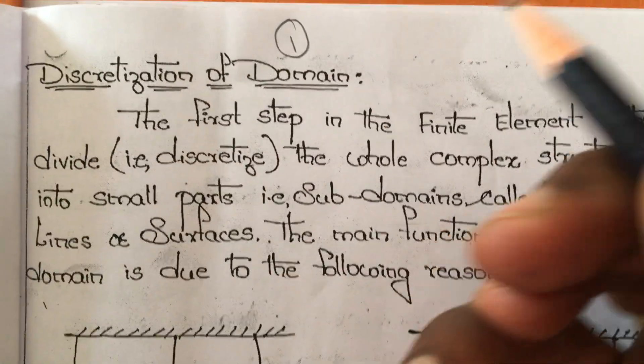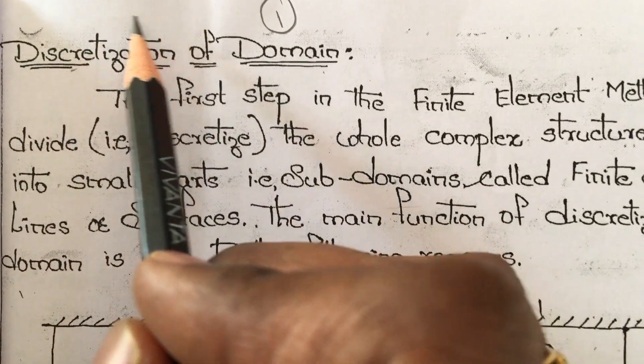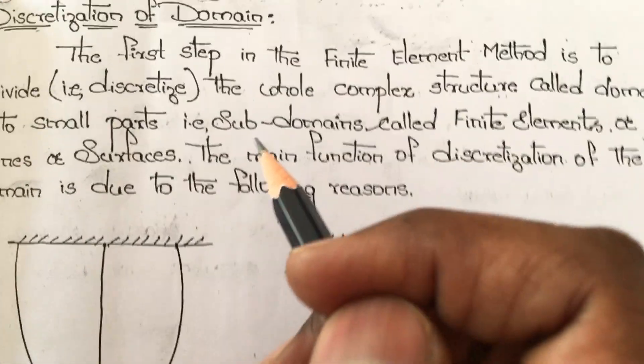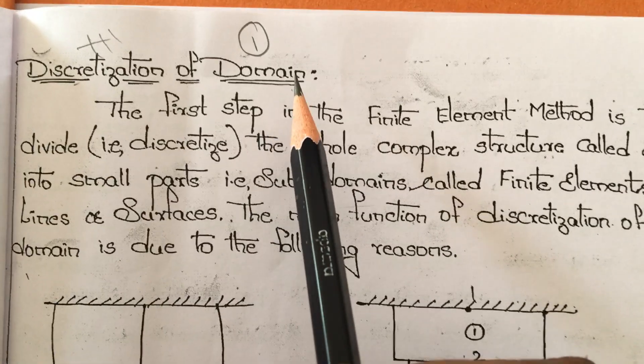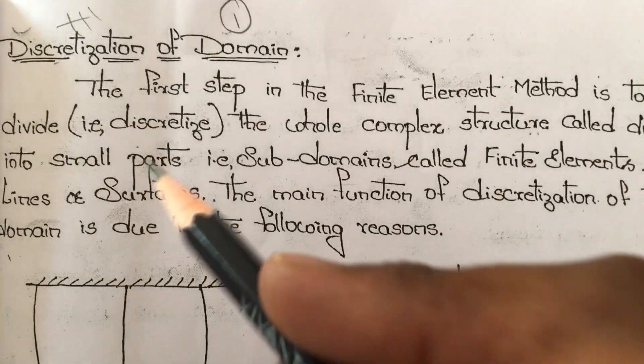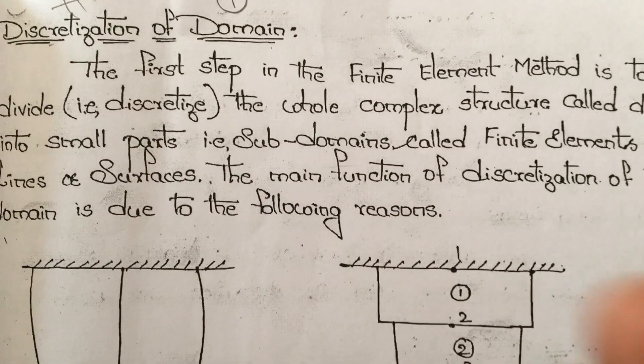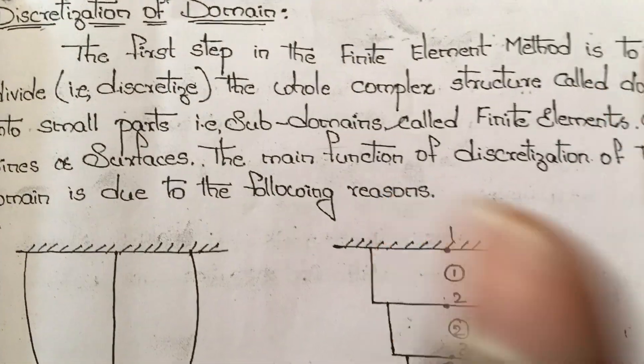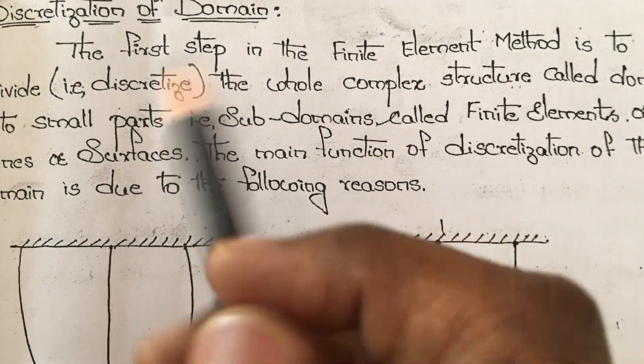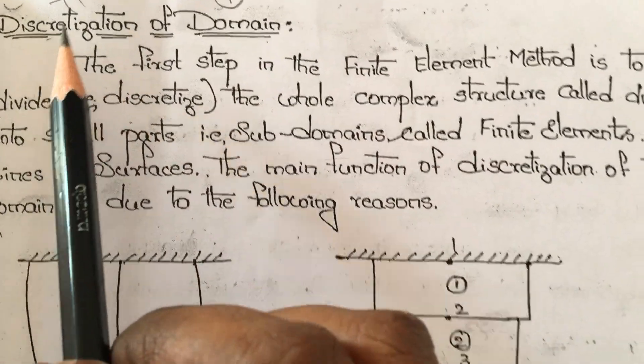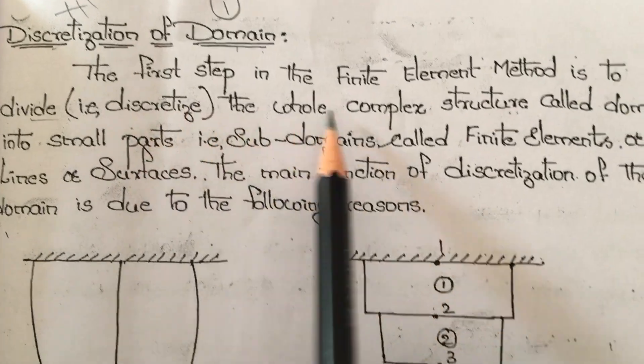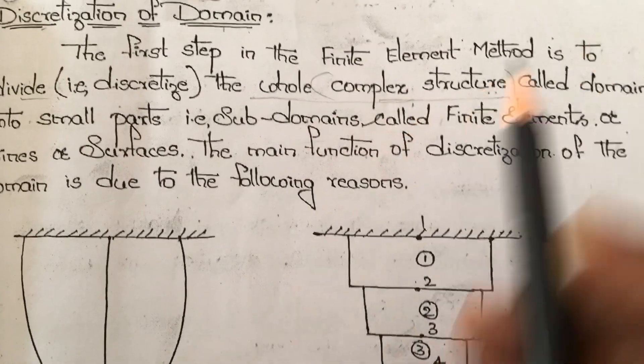The first and foremost step is discretization of the domain. The word discretization means dividing the element. What is discretization of domain? The first step in the finite element method is to divide or discretize the whole complex structure called domain.